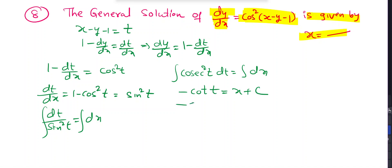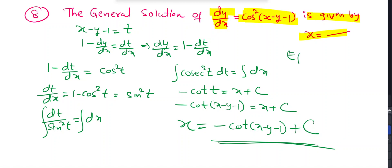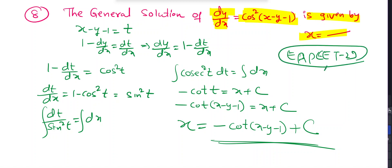Substituting back t = x - y - 1: -cot(x - y - 1) = x + C. Rearranging: x = C - cot(x - y - 1). This is an AP F-set 2023 question.